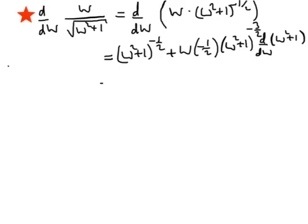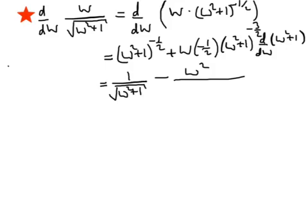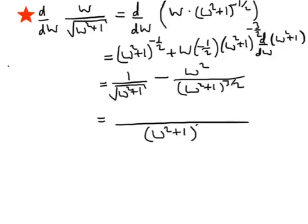Writing this more explicitly, we have 1 over the square root of w squared plus 1 as the first term. The second term has a minus sign: the 2 and the half cancel, and w multiplied by w gives a w squared factor, over w squared plus 1 all to the power of 3 over 2. We can simplify by putting these two structures over a common denominator, which is w squared plus 1 all to the power of 3 over 2.